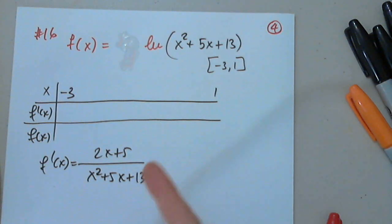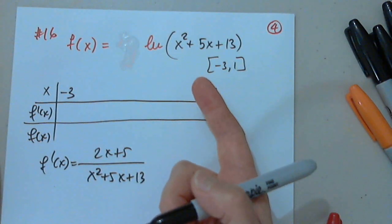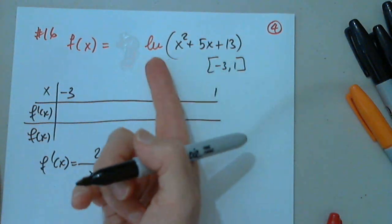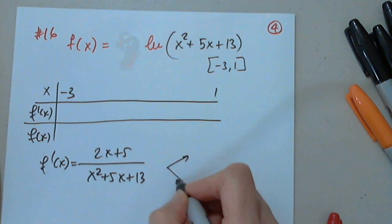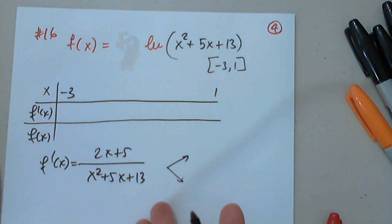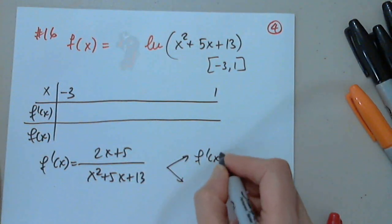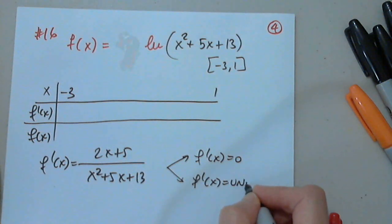So this should never be undefined. Because even if it's undefined, then the function is undefined, so it cannot be a critical number. But I have to write to show that I know critical numbers come from two sources: from f prime of x equals 0 and from f prime of x being undefined.